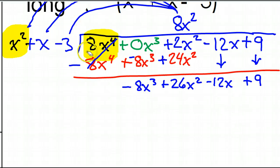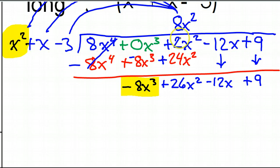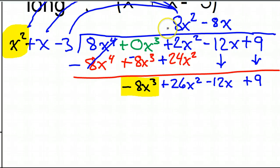Now we basically start over. This is my new first term: negative 8x to the third power. I ask myself: x squared times what is going to give me negative 8x to the third power? I'm going to need negative 8, and x squared times x gives x to the third power. So negative 8x times x squared will make negative 8x to the third power.